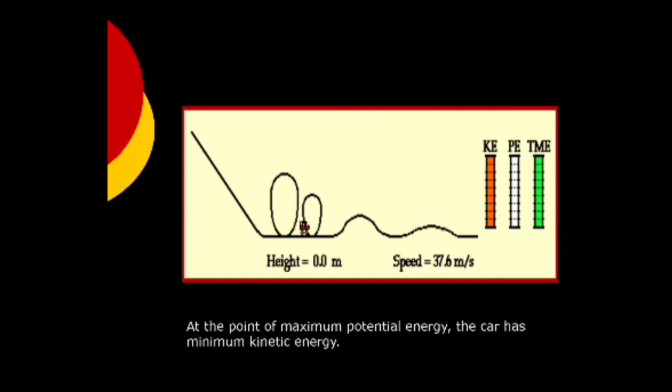Kinetic-potential energy conversion. Rollercoasters work because of the energy that is built into the system. Initially, the cars are pulled mechanically up to the tallest hill, giving them a great deal of potential energy. From that point, the conversion between potential and kinetic energy powers the cars throughout the entire ride.